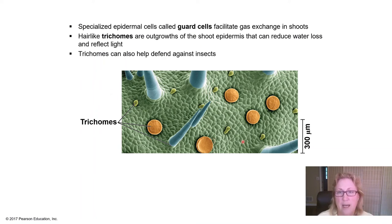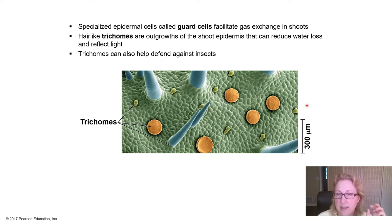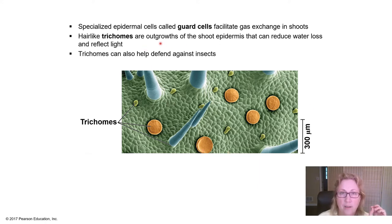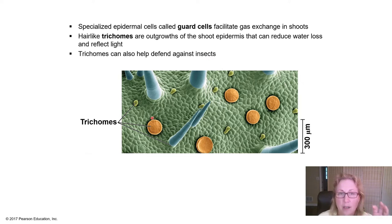On the outside of a leaf or stem, specialized epidermal cells called guard cells help gas exchange. There are also hair-like trichomes — visible in this scanning electron microscope image — that can help reduce water loss and defend against predators. These are the reason some leaves feel quite furry.